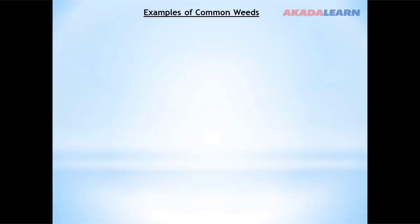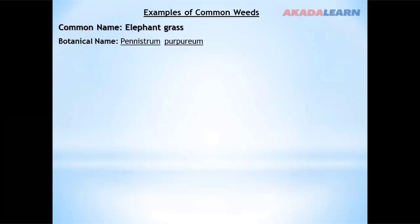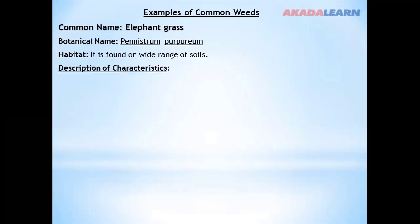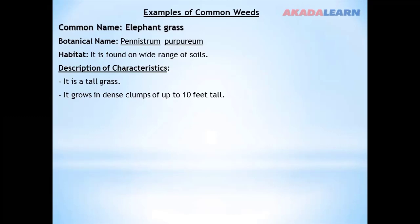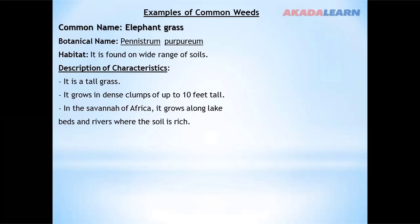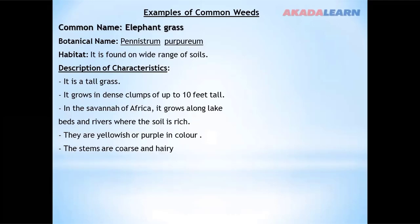Examples of common weeds: Elephant grass, with the botanical name Pennisetum purpureum, is found in a wide range of soils. It is tall, growing in dense clumps of up to 10 feet. In the savannah of Africa, it grows along lake beds and rivers where the soil is rich. It is yellowish or purple in color, the stems are coarse and hairy, the leaves are 2 to 3 feet long, and the edges of the leaves are razor sharp.